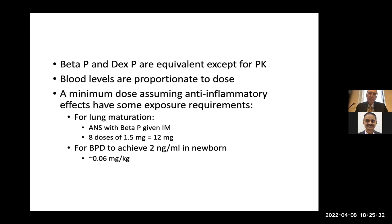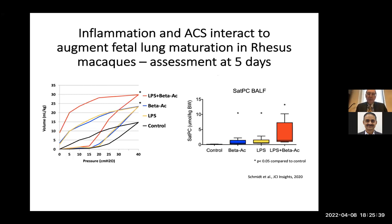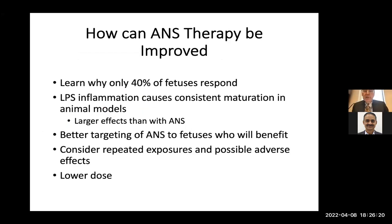Something we found years ago: when you cause inflammation with chorioamnionitis, you actually augment fetal lung maturation in rhesus monkeys. Combining the low dose of beta acetate — which causes a very low blood level — with intra-amniotic LPS shows both a PV curve response and increased saturated PC in the BAL. This low dose works even in the face of infection.